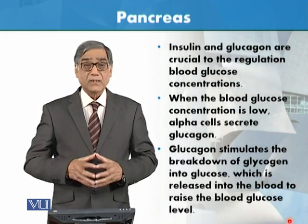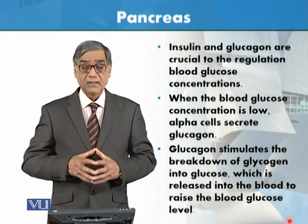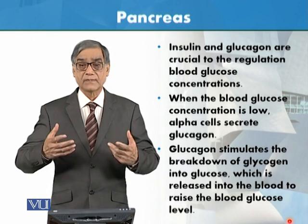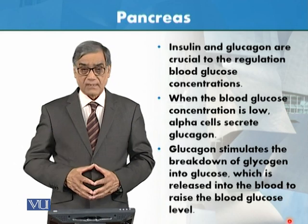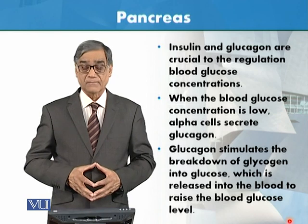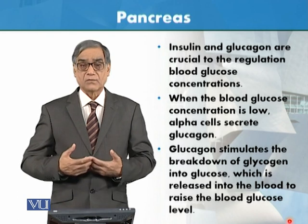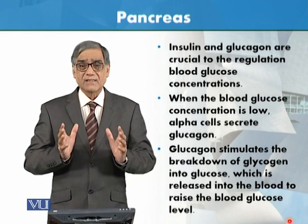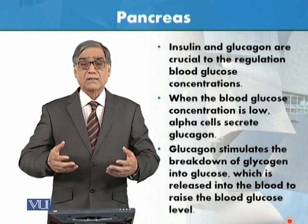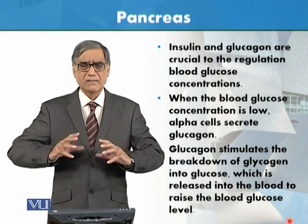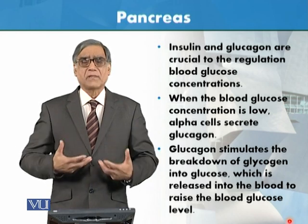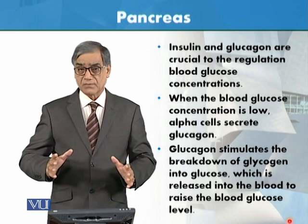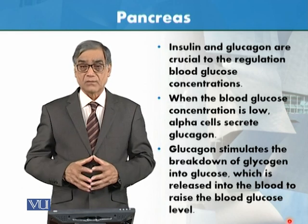When glucose concentration remains high in the blood, we call it diabetes. Insulin and glucagon are crucial to the regulation of blood glucose concentration, which is very important to maintain. If blood glucose concentration goes outside the normal range, we call it diabetes mellitus. Blood glucose concentration must be very precisely regulated — insulin and glucagon secretion are precisely controlled so that the right hormone is produced when needed, maintaining blood glucose concentration.